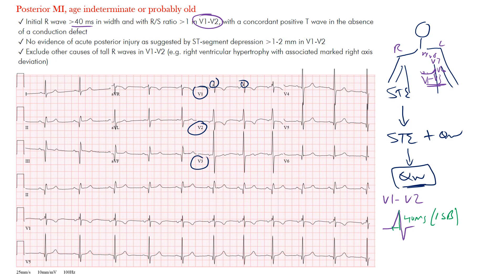This patient had an inferoposterior MI — both inferior and posterior involvement. Remember, the inferior wall and the posterior wall may be involved together because a patient may be right dominant. In a previous lecture we looked at dominance: most patients are right dominant, meaning the posterior descending artery (PDA) is fed by the right coronary artery.